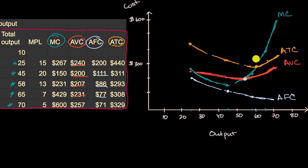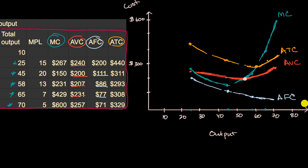We constructed these curves several videos ago to visualize how average fixed cost trends over time. As you take that fixed cost and spread it over more and more units, you see that it just asymptotes towards zero as you get more and more units. You see your marginal cost curve — this is something you'll typically see in a lot of textbooks — it's kind of U-shaped.